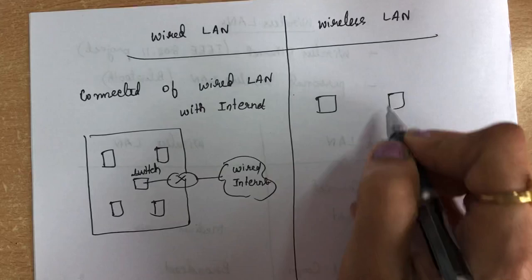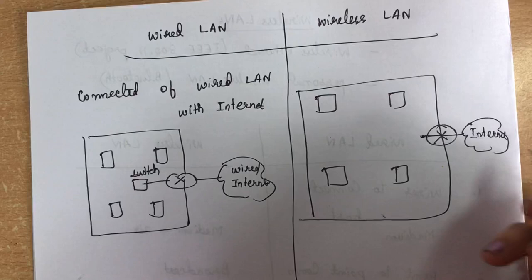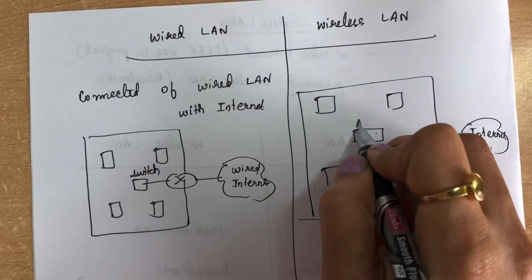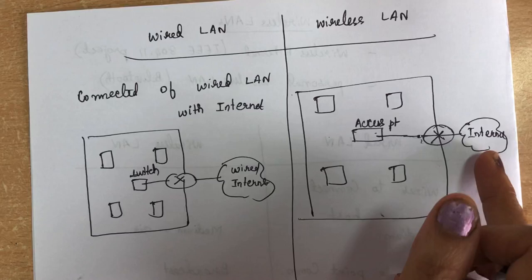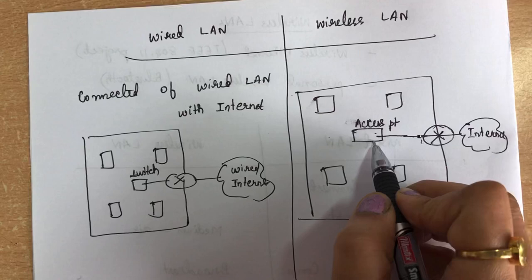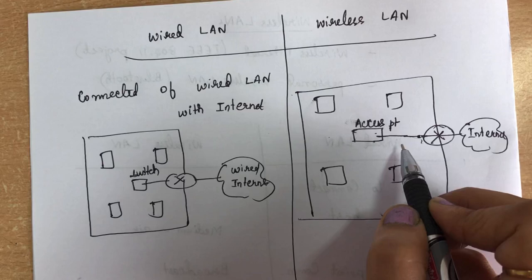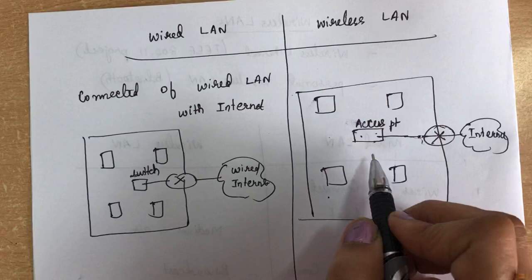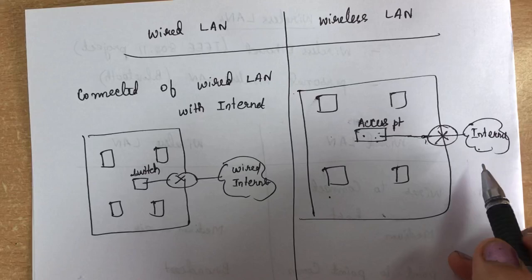Coming to wireless LAN, if hosts want to communicate with the internet, they need a router and also an access point. The access point acts as a glue between two different environments — a wired infrastructure and a wireless infrastructure. The communication between the access point and wireless hosts is over wireless medium, while the communication between the access point and the internet is over wired medium.